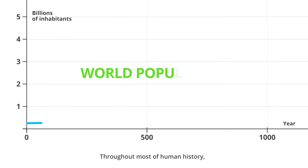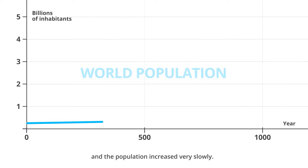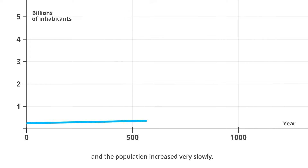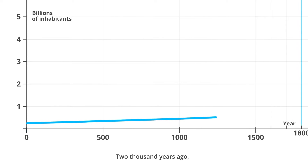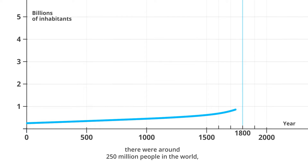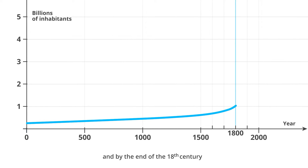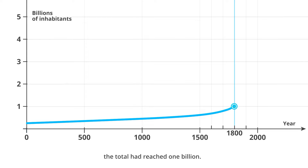Throughout most of human history, the number of people on Earth could be counted in just hundreds of thousands, or in millions, and the population increased very slowly. 2,000 years ago, there were around 250 million people in the world, and by the end of the 18th century, the total had reached 1 billion.